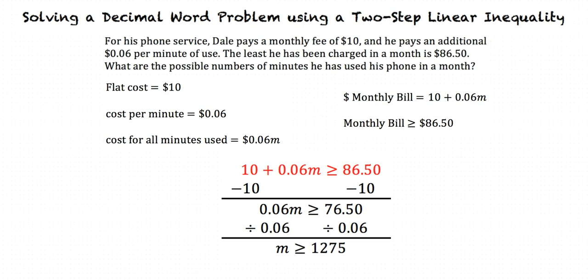So in order to solve a decimal word problem using a two-step linear inequality, the first step is to set up an inequality using an equation on one side and a fixed number on the other, and the second step is to solve the inequality for the variable. It looks like you understand this topic of solving a decimal word problem using a two-step linear inequality.